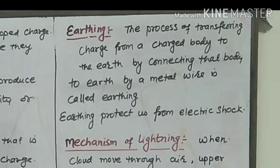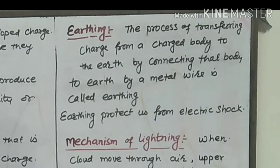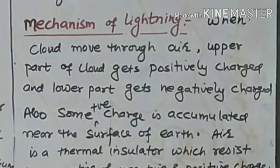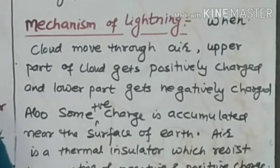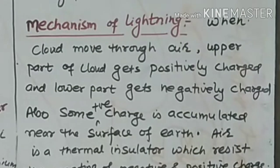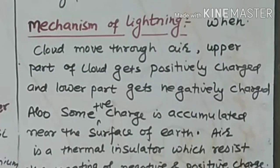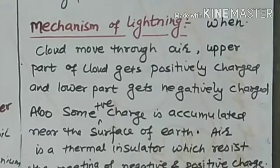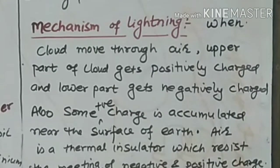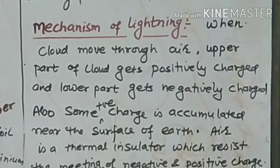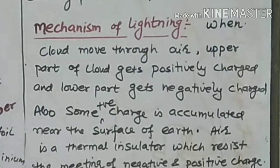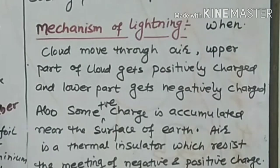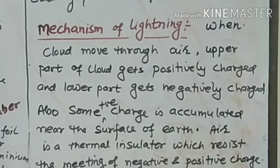Now we come to the mechanism of lightning. When two bodies are charged — one is positive charge and the other is negative charge — when clouds take up water, the water droplets, which are in the water, mutually interact with themselves as well as with the air.